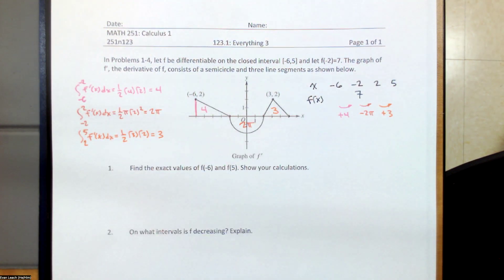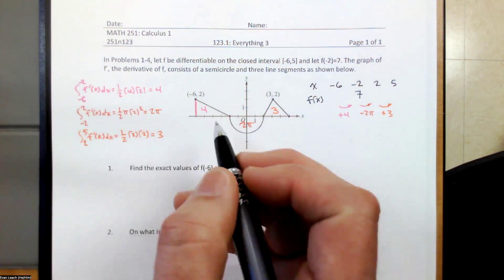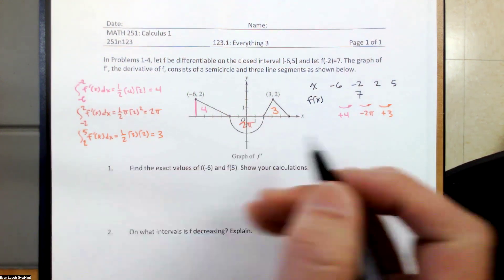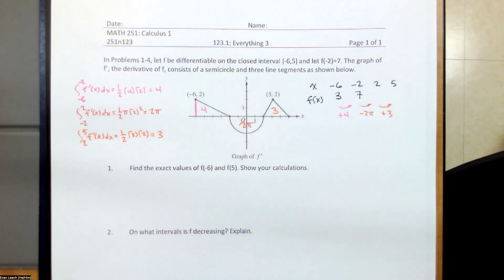The areas of those three regions tell us how things are changing. So if we were to make a table of values for what's going on, we know that f of negative 2 is 7, and that the integral from negative 6 to negative 2 of f prime is 4, because that's the area. So we must have been starting off at 3 to add 4 to end up at 7. So if we're adding 4 one way, we're subtracting 4 the other way.